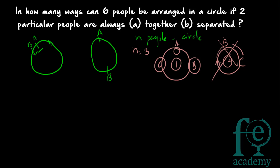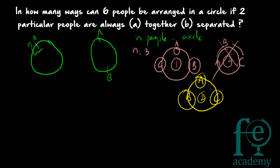For 3 people, only two distinct arrangements are possible: one is A, B, C and the second is A, C, B. All other arrangements can be obtained by rotating the same circle, so they are not counted as different.